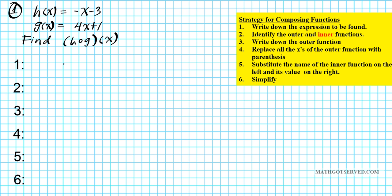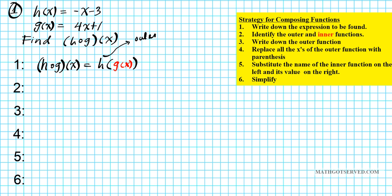As indicated in step one of our strategy, we'll first write down the expression to be found: h composed with g of x. This can be written as h of g of x. Now in step two, we have to identify the outer and inner function. Whichever function comes first is the outer. So h is the outer function and g of x is your inner function.